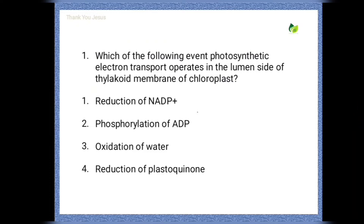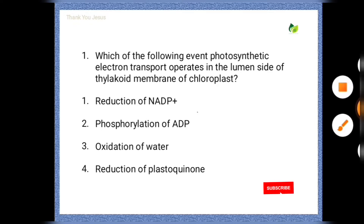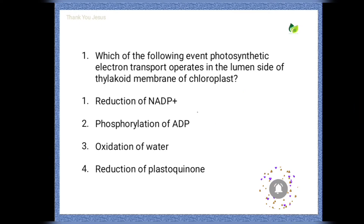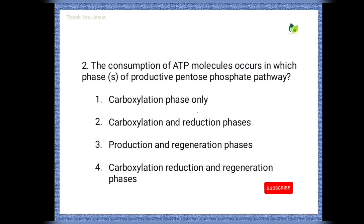Which of the following events of photosynthetic electron transport operates on the lumen side of the thylakoid membrane of chloroplast? Options are: reduction phase of NADP+, phosphorylation of ADP, oxidation of water, reduction of plastoquinone. The correct option is the third one — oxidation of water.